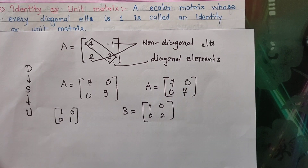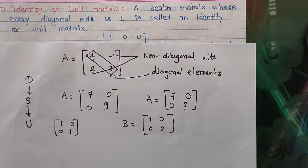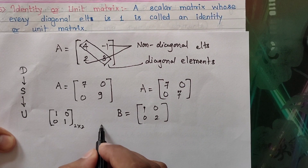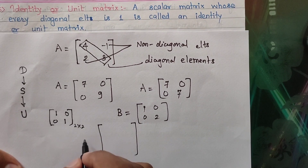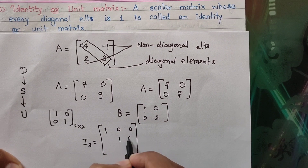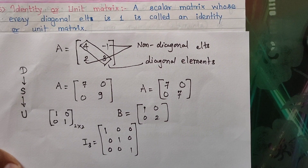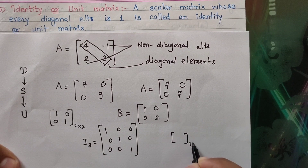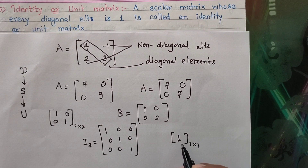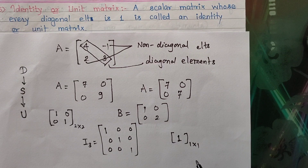A unit matrix of order 2 has diagonal elements 1 and off-diagonal elements 0. Can you write the unit matrix of order 3? I3 has all diagonal elements as 1 and non-diagonal elements as 0. And the identity matrix of order 1 is simply [1], because its only element is the diagonal element, which must be 1.